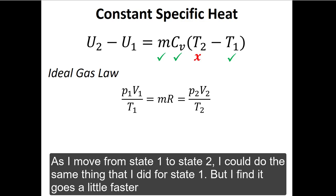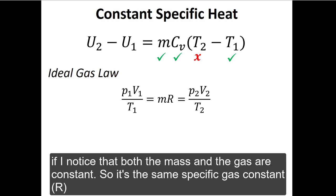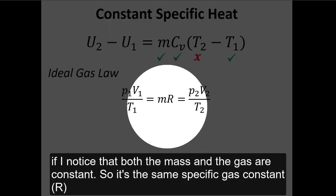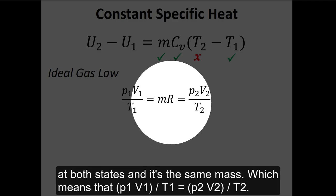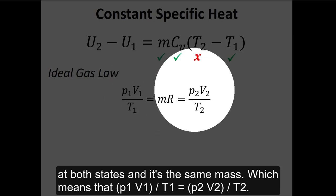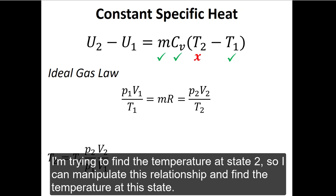As I move from state one to state two, I could do the same thing that I did for state one, but I find it goes a little faster if I notice that both the mass and the gas are constant. It's the same specific gas constant at both states and the same mass, which means that P₁V₁ over T₁ equals P₂V₂ over T₂. I'm trying to find the temperature at state two, so I can manipulate this relationship and find the temperature at this state.